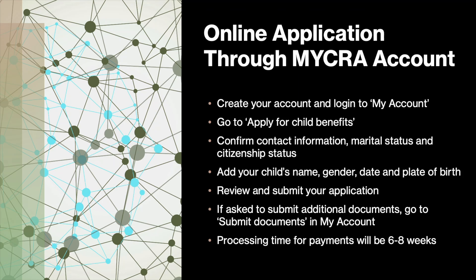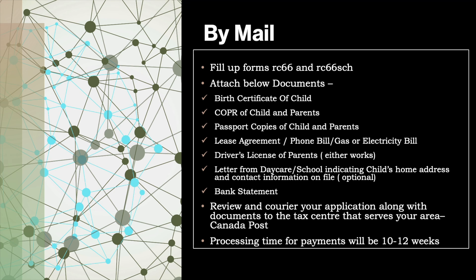To apply online through My CRA Account: create your account, log in, go to 'Apply for Child Benefits', confirm your contact information, marital status, and citizenship status. Add your child's name, gender, date and place of birth, then review and submit your application. If CRA asks for additional documents, go to 'Submit Documents' in My Account and upload whatever is required. Processing time for payments will be six to eight weeks.